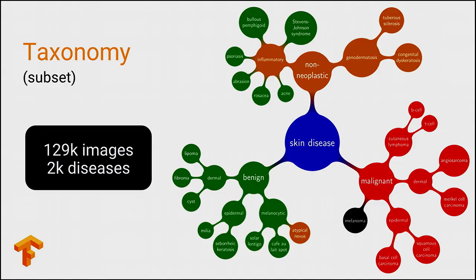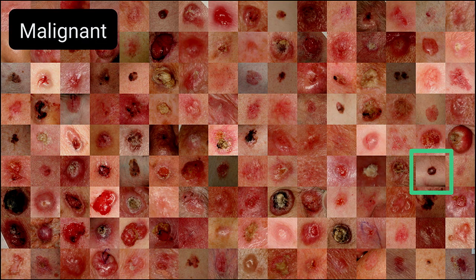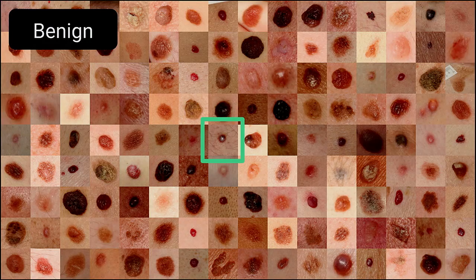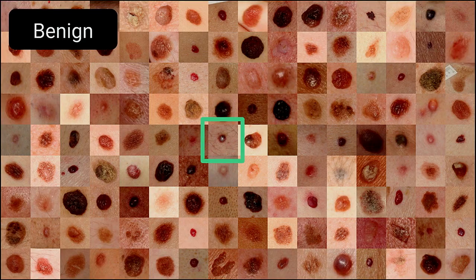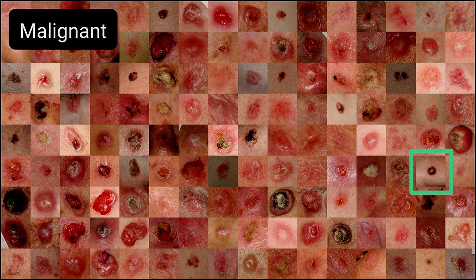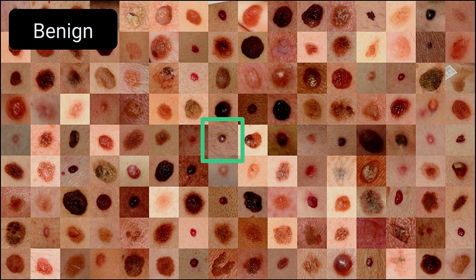On the next couple of slides, I'll show some benign and malignant lesions. Here are some malignant lesions, and here are some benign lesions. Flipping back and forth, you can see a visual distinction, but there are also some lesions that are very similar between the two, which I highlight in green.